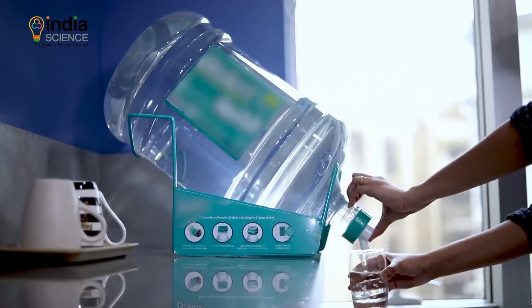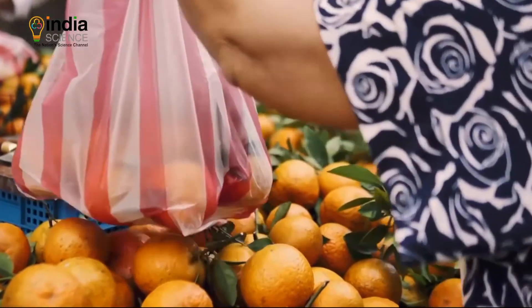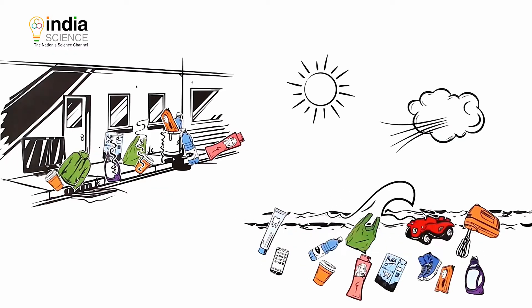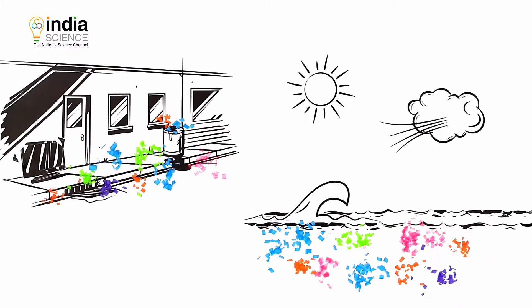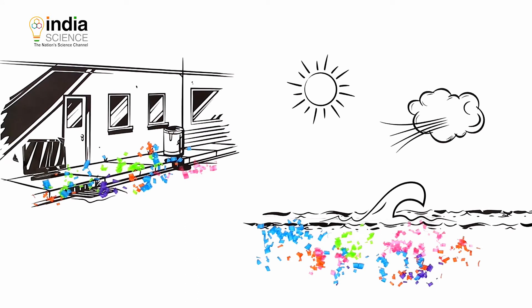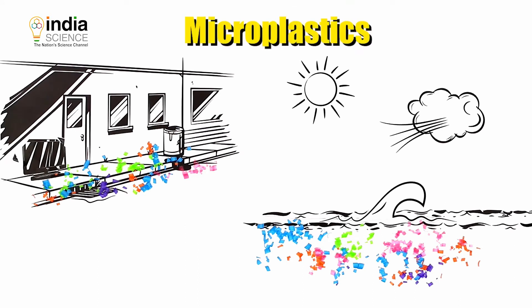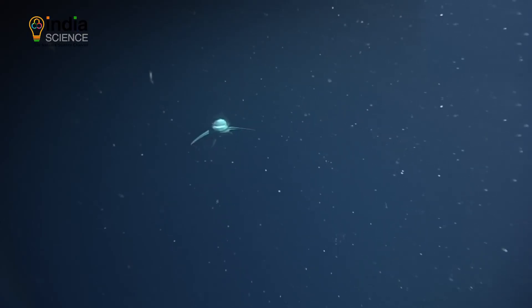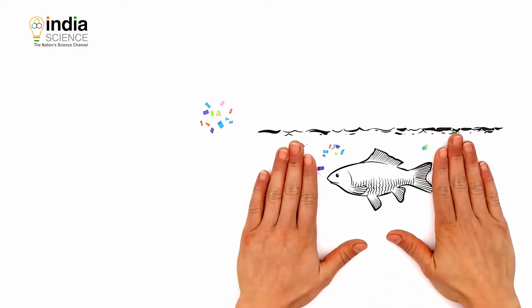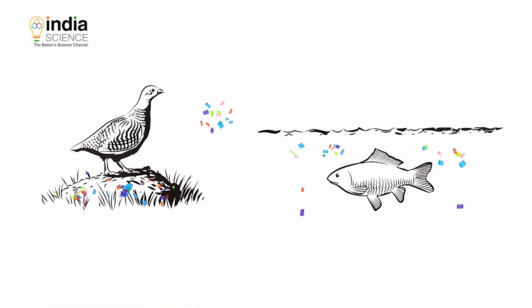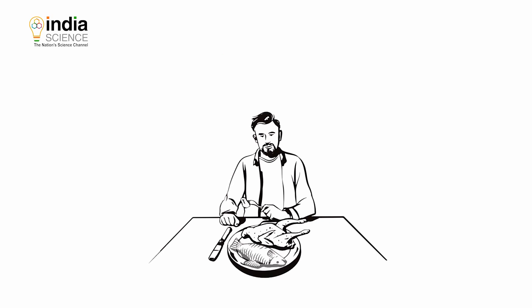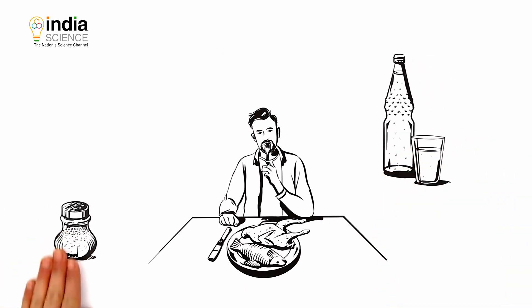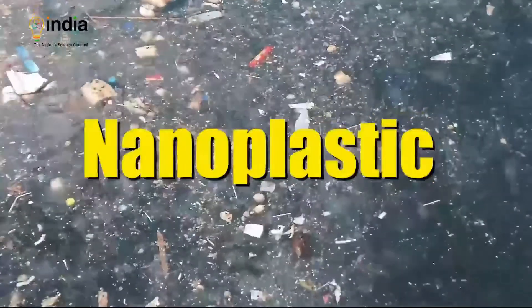The much smaller particles of different origins, sizes, and chemical composition are the microplastics. They are 1 to 5 mm in size and float in our oceans like a soup. These pose a clear danger because they can find their way directly or spontaneously into the food chain due to their size. But the most challenging form is the nanoplastic.